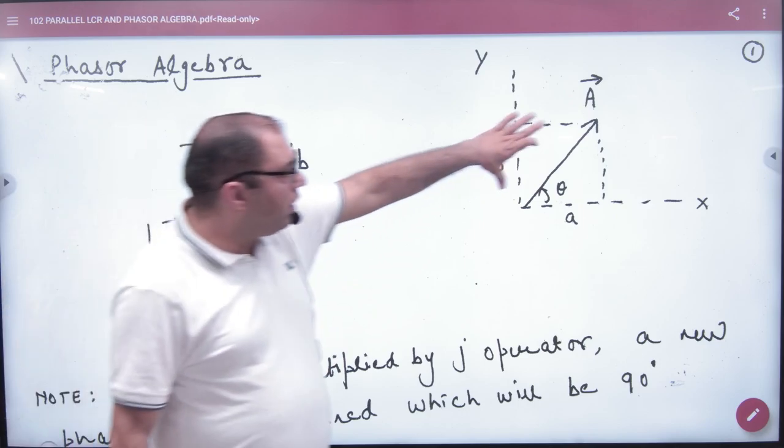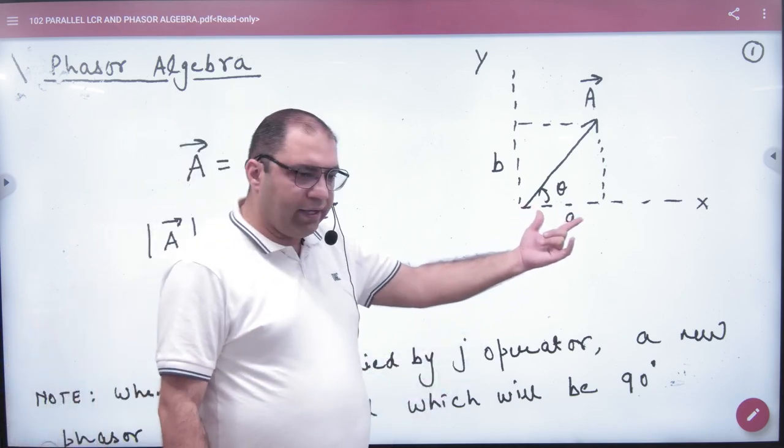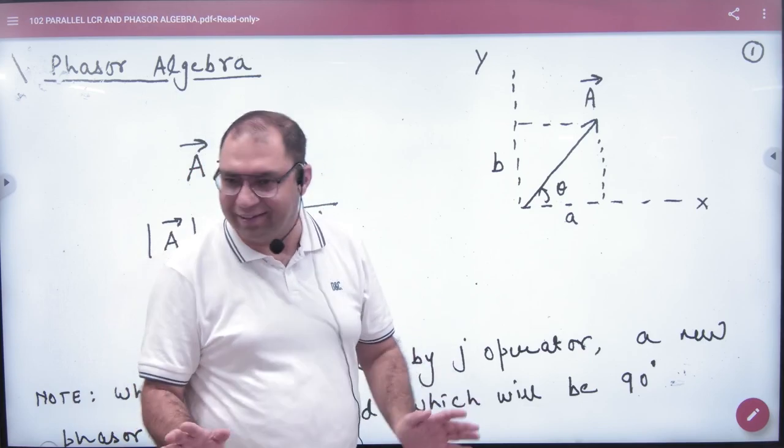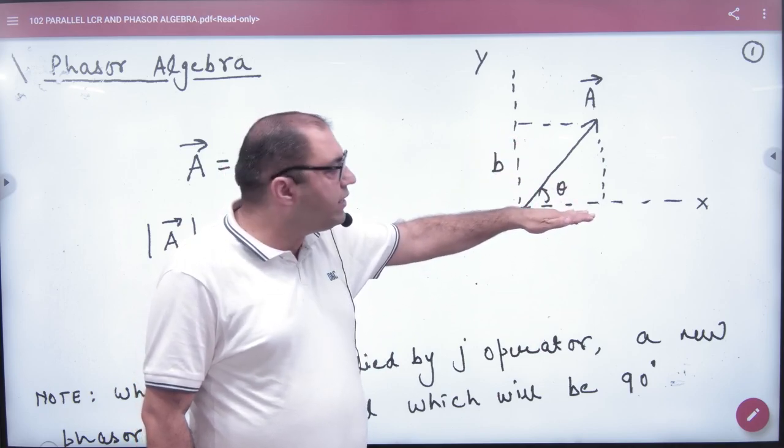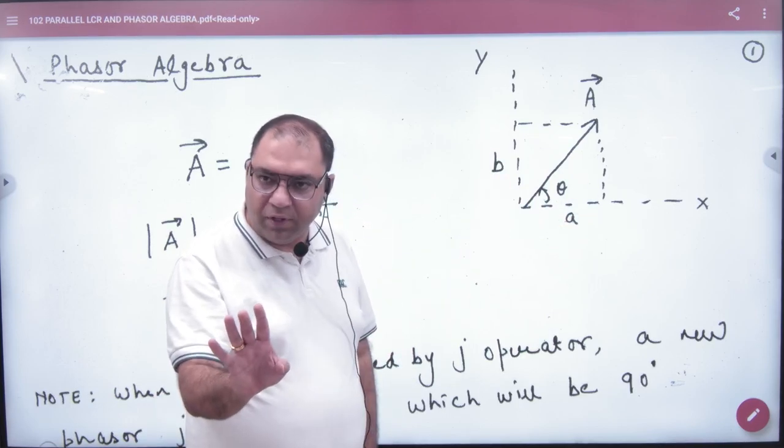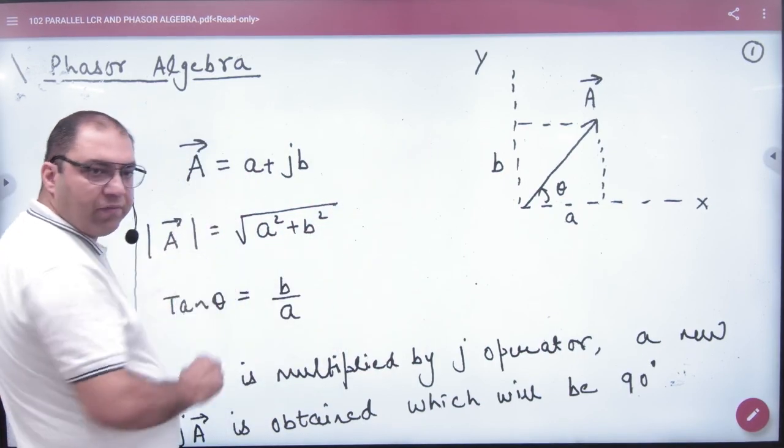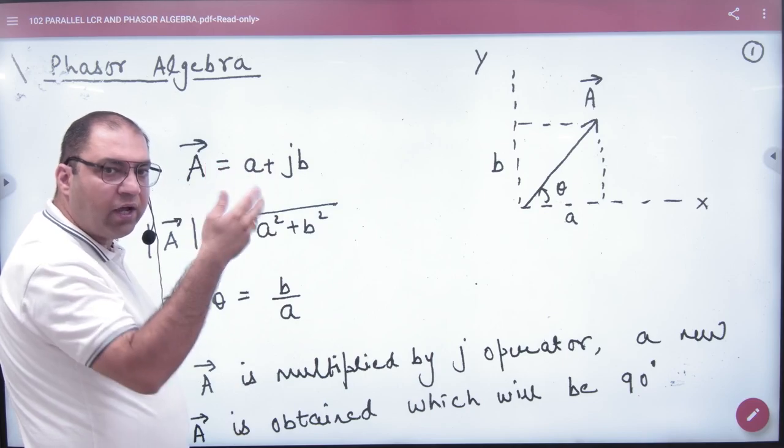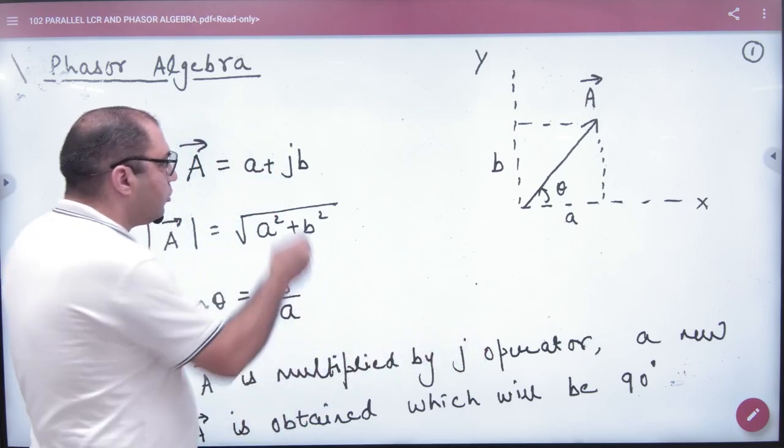First of all, if a vector has two components, a component is a, and a component is b. I am not doing resolution of vector here. This component is x along, b component is y, anticlockwise is higher by an angle of 90. So, in phasor algebra, we can write a vector as A equals a plus jb, where j is here.